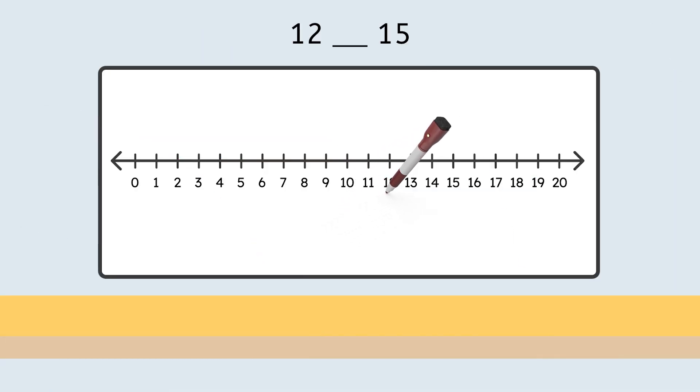First, we find and circle both numbers on the number line. Then we look for the number that comes first. The number that comes first is smaller or less than. The number that is further down the number line is bigger or greater than.